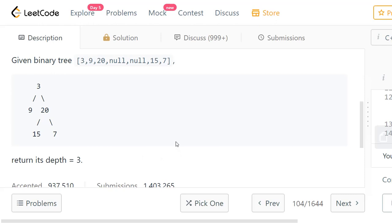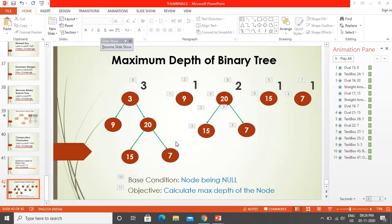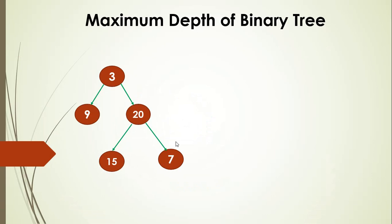So how do we approach this problem? If you have solved binary tree problems before, it should be pretty easy. To find the maximum depth for node 3, we need to find the maximum depth of its left subtree and then find the maximum depth of its right subtree. The maximum depth for node 3 will be the maximum of these two plus 1 — you add 1 because you have to consider node 3 itself.